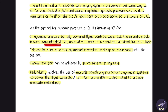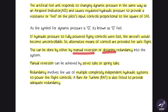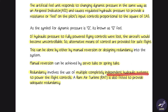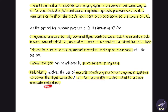If hydraulic pressure to the fully powered flying controls were lost, the aircraft would become uncontrollable, so alternative means of control must be provided. This can be achieved by manual reversion — using servo tabs or spring tabs — or by designing redundancy through independent hydraulic systems powering the flight controls, as well as a ram air turbine, which all aircraft have and can be used in emergencies.